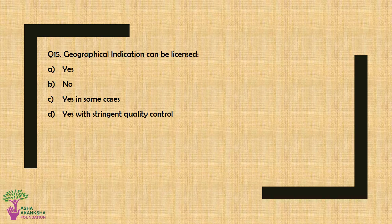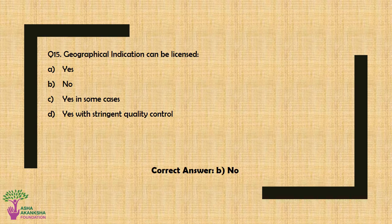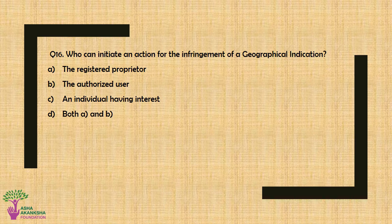Question No. 15: Geographical indication can be licensed — Option A: Yes, Option B: No, Option C: Yes in some cases, Option D: Yes with stringent quality control. The correct answer is Option B — No.